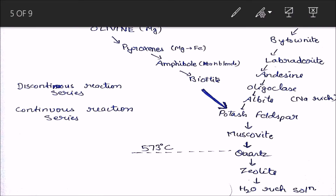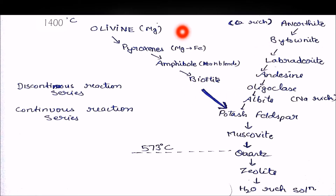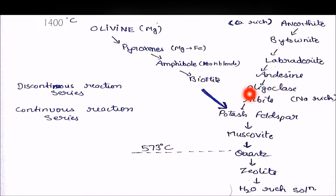So there is a molten magma. When it starts to crystallize, it first crystallizes into olivine, then pyroxene, then amphibole, then biotite. On the other side: anorthite, then bytownite, then labradorite, then andesine, then oligoclase, then albite, and then potash feldspar, muscovite, quartz, and zeolite.